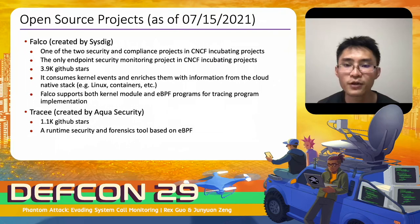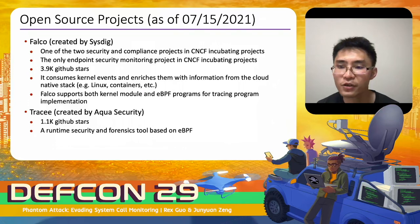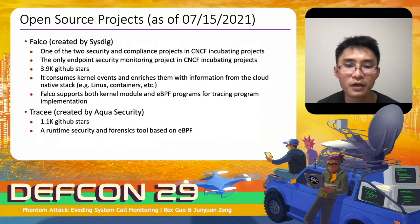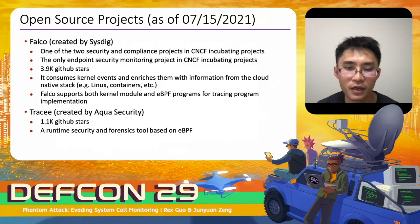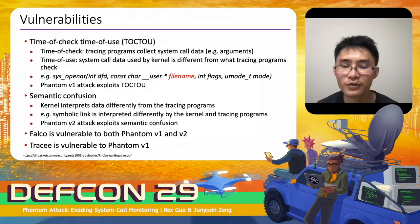The open-source projects Falco and Tracee both use similar techniques to monitor syscalls. Falco, originally created by Sysdig, is one of the CNCF incubating projects — the only endpoint security monitoring project — with 3.9k GitHub stars. It consumes kernel events and enriches them with information from the cloud-native stack. Falco supports both eBPF and kernel module implementations. Tracee, created by Aqua Security, has 1.1k GitHub stars and is a runtime security and forensics tool based on eBPF. Unfortunately, open-source projects using these techniques are vulnerable to attacks during syscall monitoring.